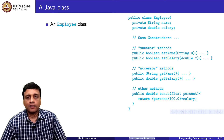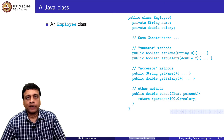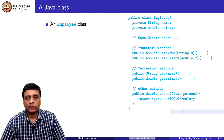Let us begin with a standard class. Suppose we want to keep track of people in an organization — we want to keep track of personnel. So we create a class called Employee which will store information about each employee, where each object will denote one person in the organization.